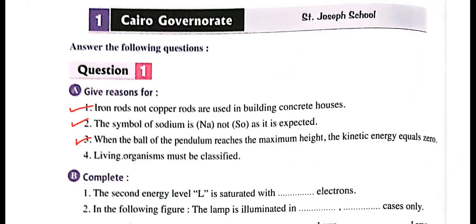Question four: living organisms must be classified — why? We have enormous numbers of living organisms, so we have to classify them to ease their study. The answer: living organisms must be classified due to the enormous diversity in the number and kinds of living organisms, and to ease their study.